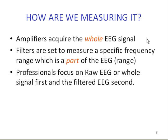How do we measure it? We measure the EEG, or the electroencephalogram, with amplifiers, which measure the whole EEG signal, and then filters are applied to measure portions of that signal, or ranges. Professionals focus on the raw EEG, or whole signal, first, and the filtered EEG second.